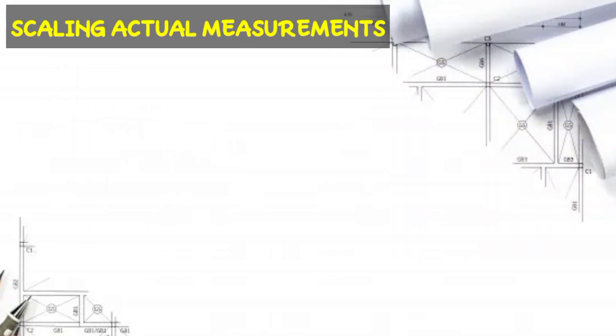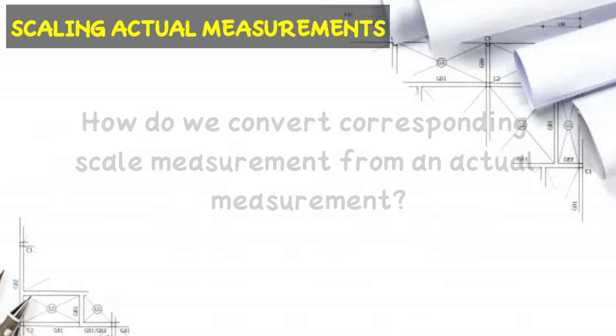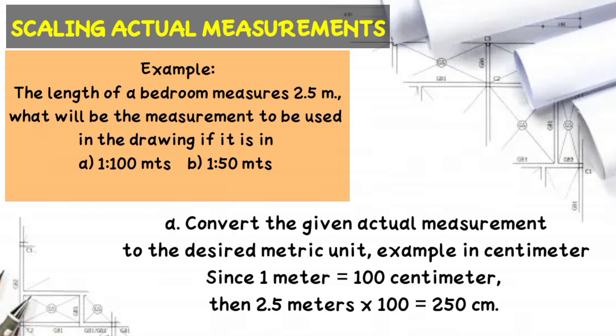Scaling actual measurements. How do we convert a corresponding scale measurement from an actual measurement? Follow the suggested computation. The first example: the length of a bedroom measures 2.5 meters. What will be the measurement used in drawing if the scale is 1 to 100 and 1 to 50? Letter A: convert the given actual measurement to the desired unit. Since 1 meter is equivalent to 100 cm, then 2.5 meters times 100 equals 250 cm.